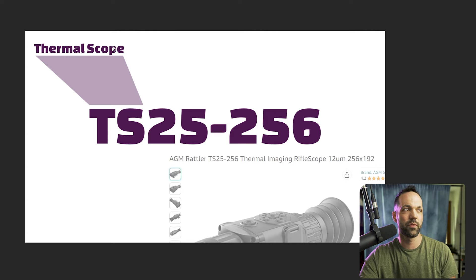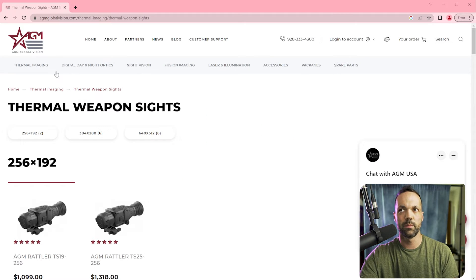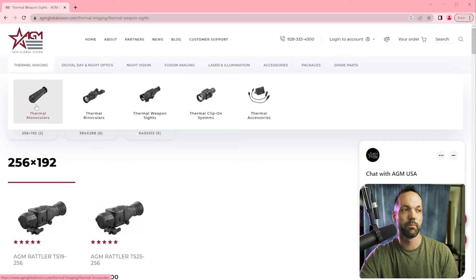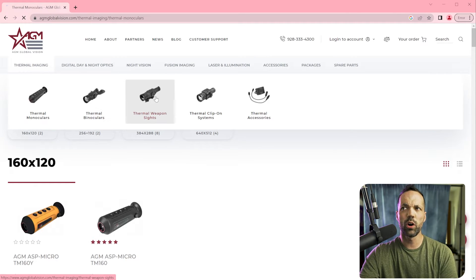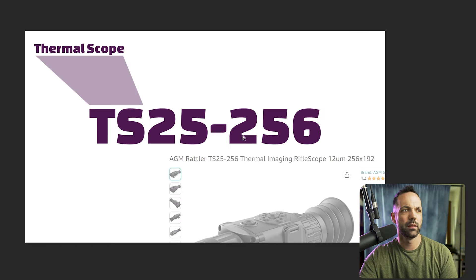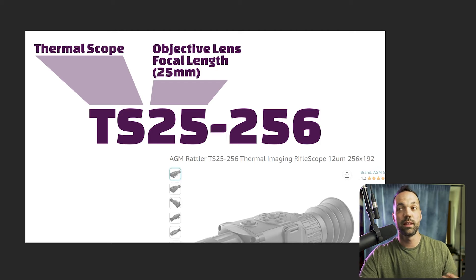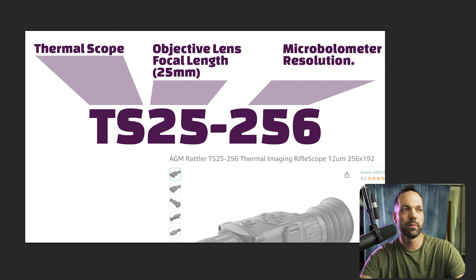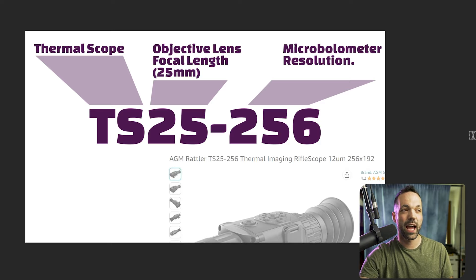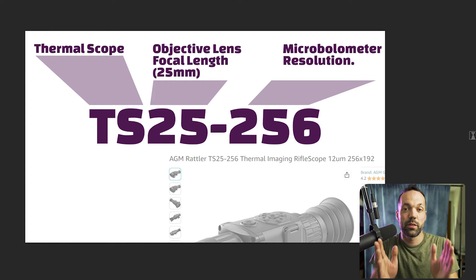The 'TS' stands for thermal scope, differentiating it from AGM's other thermal products — thermal binoculars start with TM, and binoculars are TB. All thermal scopes are TS. The next two-digit number is the objective lens focal length — so the TS-25 is a 25 millimeter. The objective lens collects infrared radiation and directs it toward the sensor. The higher the number, the more zoomed in you'll be at base magnification. The last three numbers in the product name are the microbolometer resolution — the number of pixels making up the thermal sensor.